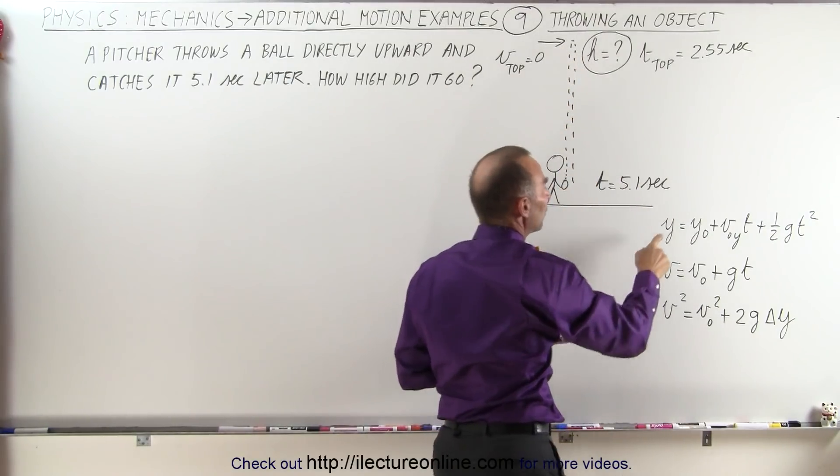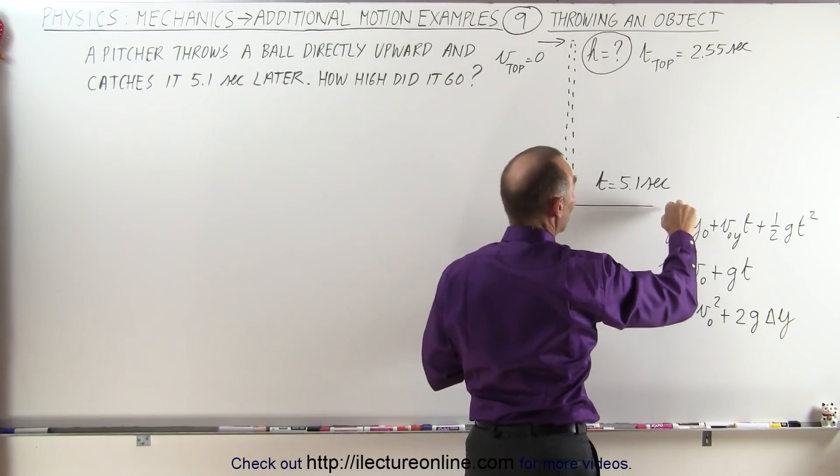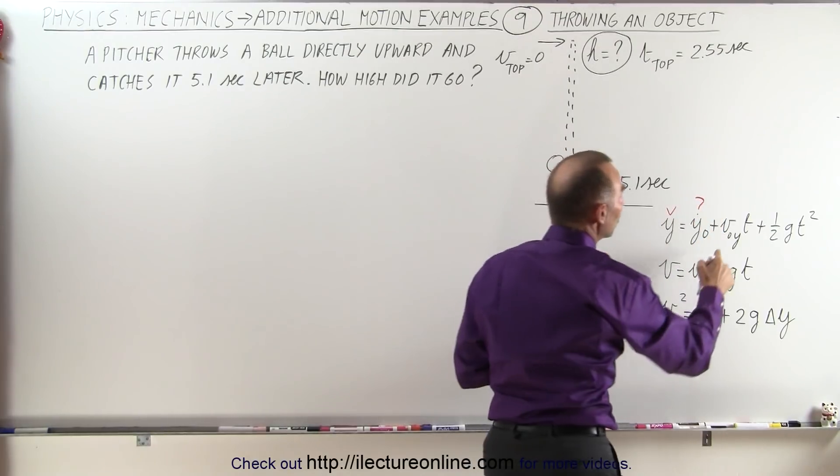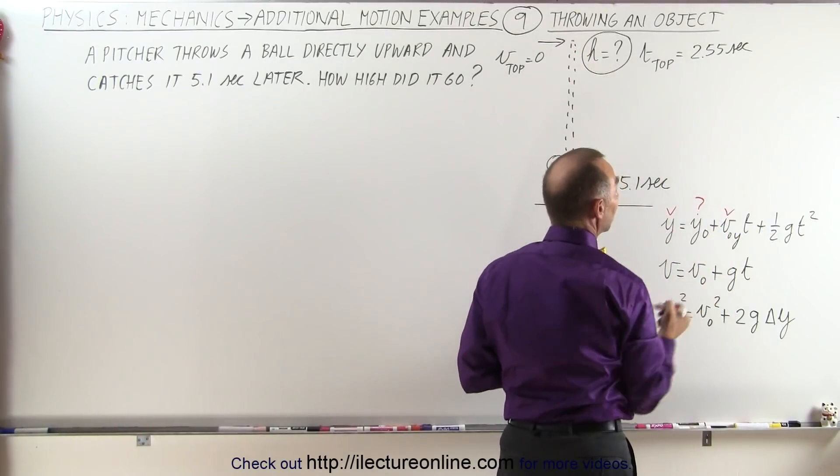So falling back down, do we know the maximum height? Well do we know the final height, and the answer is yes, that will be zero. The initial height, that's what we're looking for. The initial velocity in the y direction from the very top, and yes, we know that that would be zero.